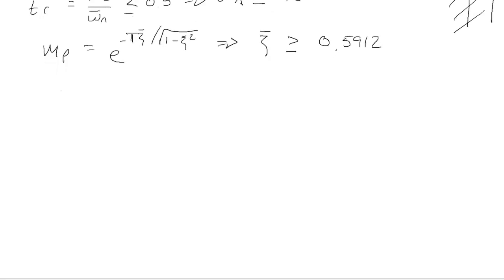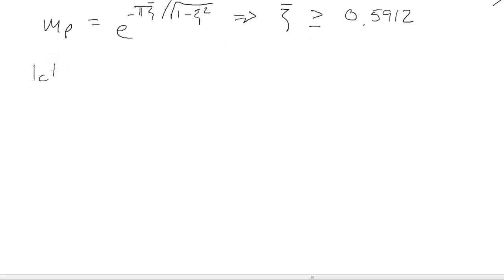Let's use the following. Let zeta bar equal 0.7, so that gives us a little margin. This requires that omega n has to be greater than or equal to 4.2 over 0.7, which equals 6, in radians per second.